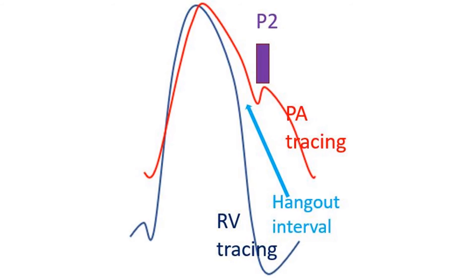The hangout interval is the time taken for actual valve closure after the pulmonary artery and right ventricular pressure tracings crossover. Crossover occurs when the right ventricle relaxes enough for the pressure to fall below the pulmonary artery pressure. The hangout interval is greater on the right side than on the left, so the aortic hangout interval is shorter than the pulmonary hangout interval.